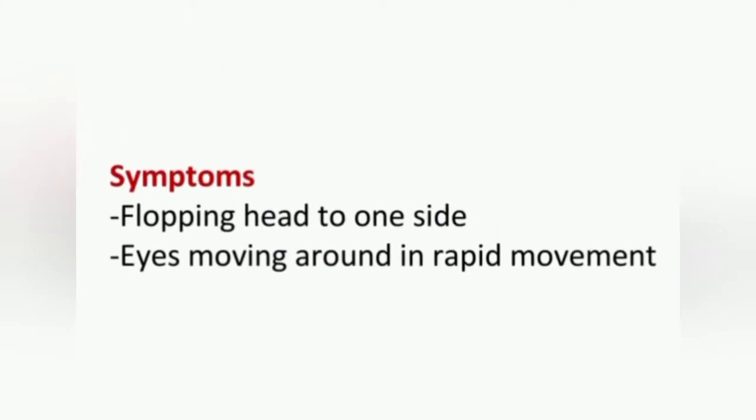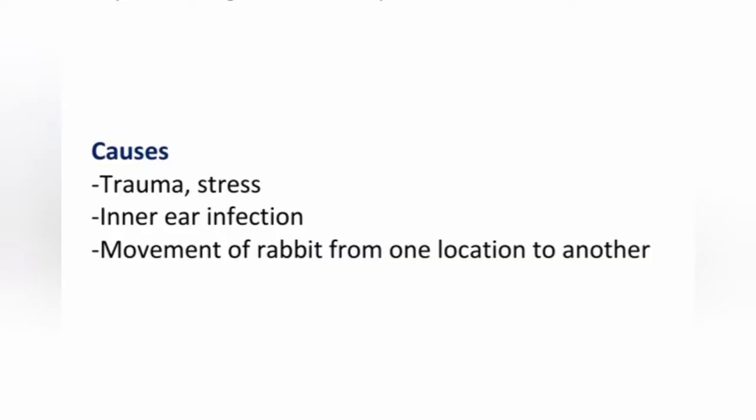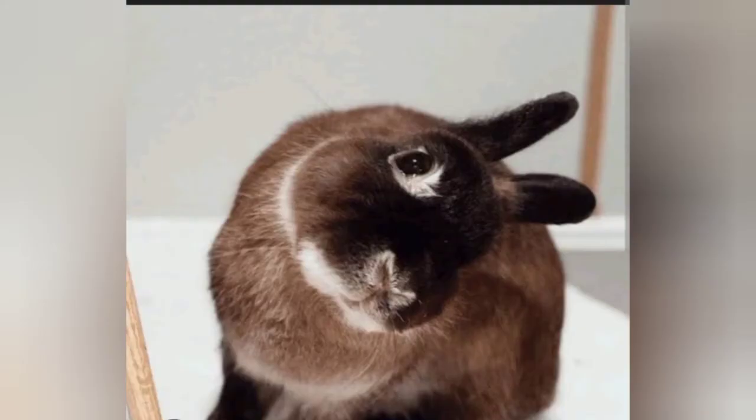The sixth common disease is known as head tilt. Head tilt is characterized by the rabbit flopping its head to one side and its eyes going side by side in a rapid movement. This is caused by either trauma, stress, inner ear infection, or a major change of location of the rabbit from one region to another.